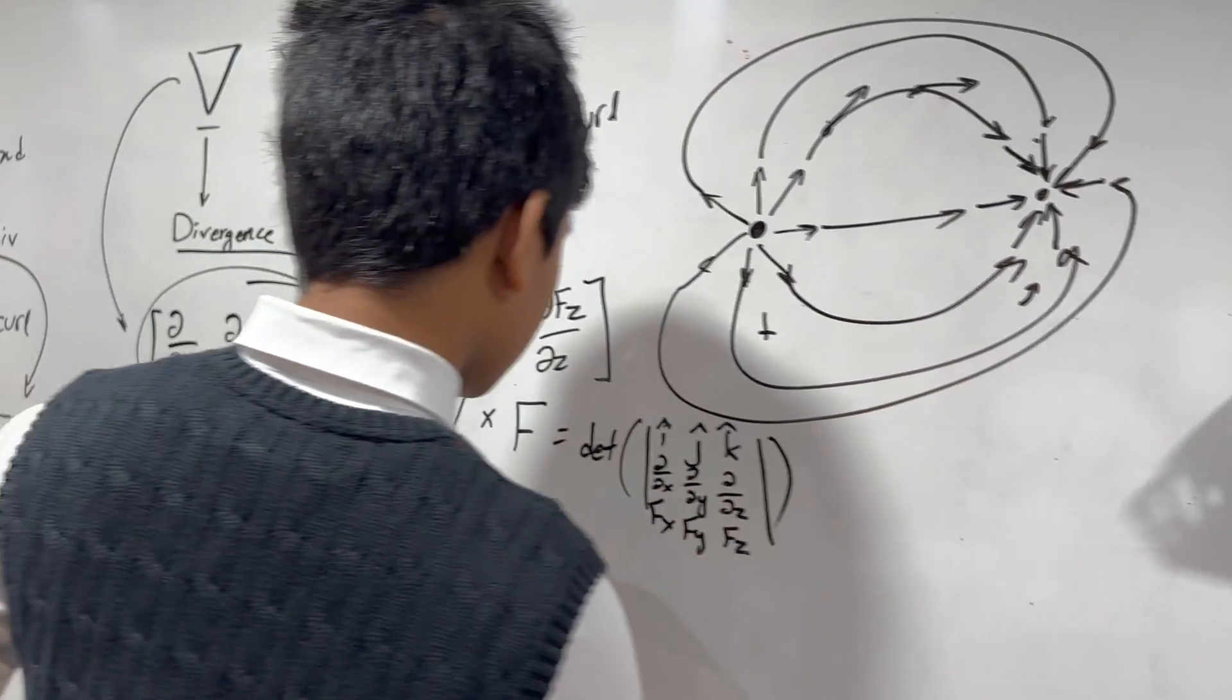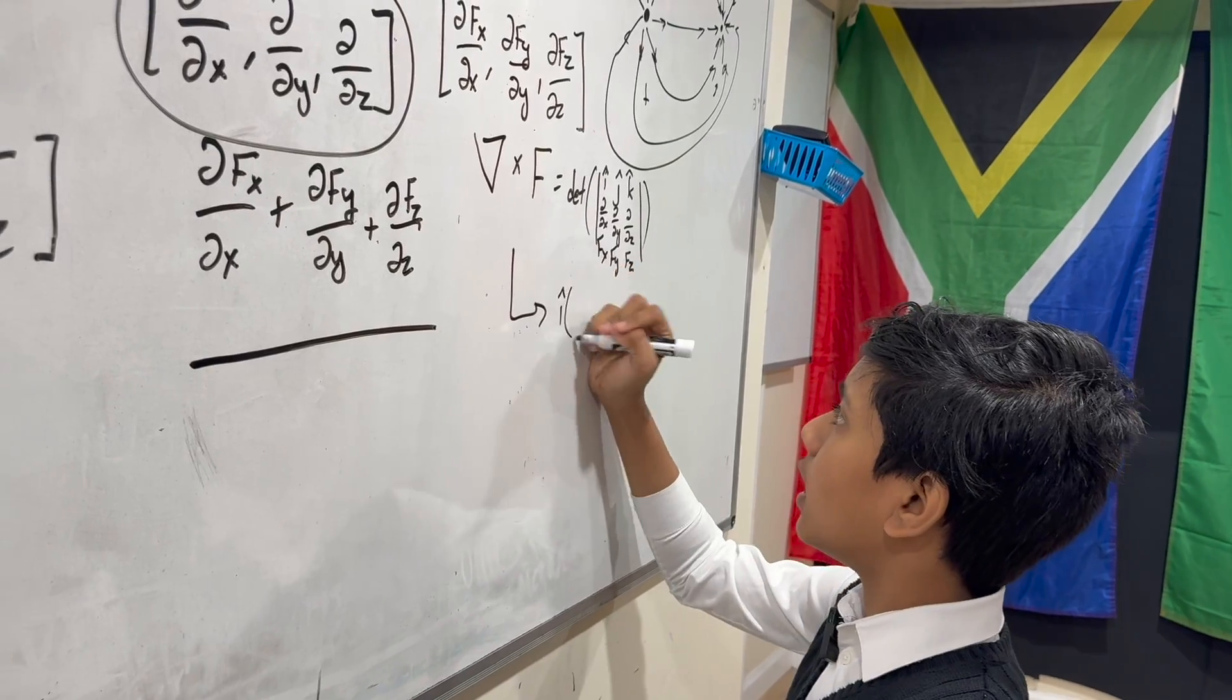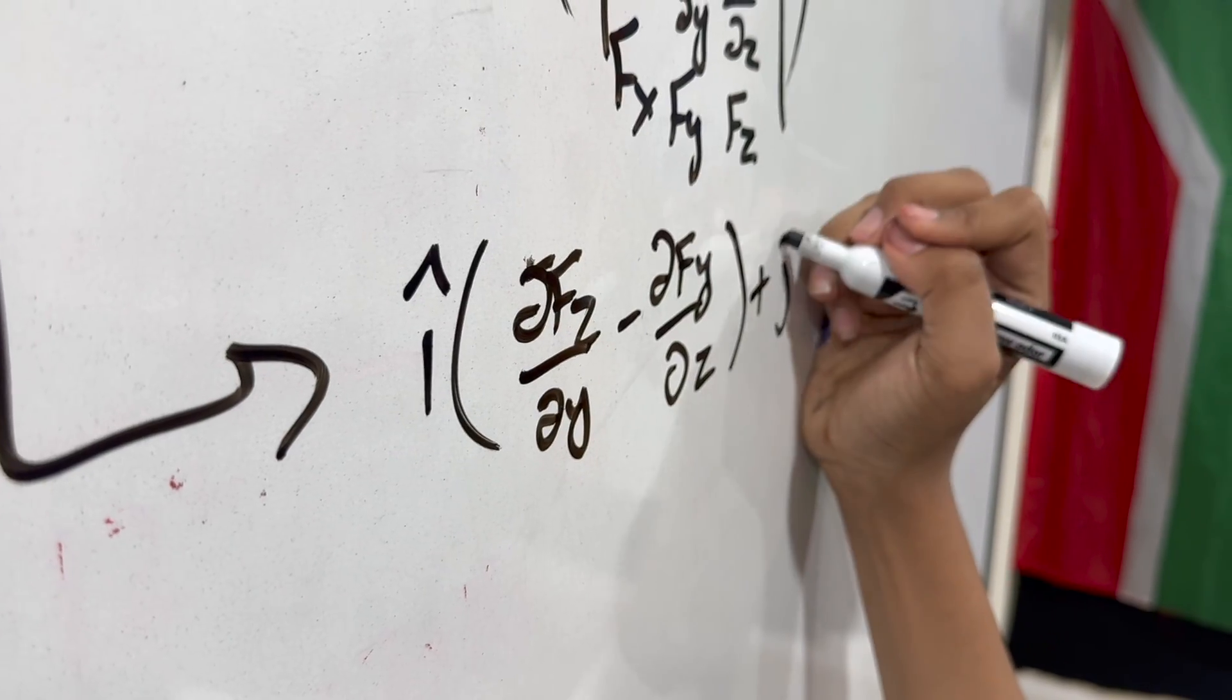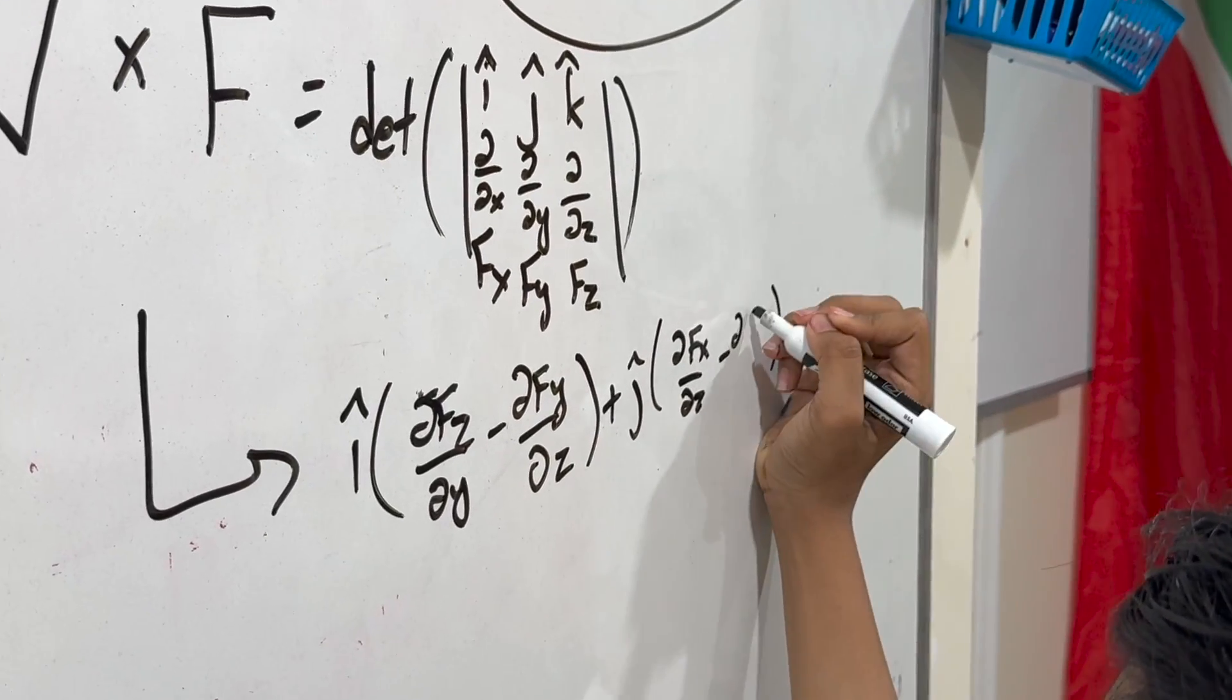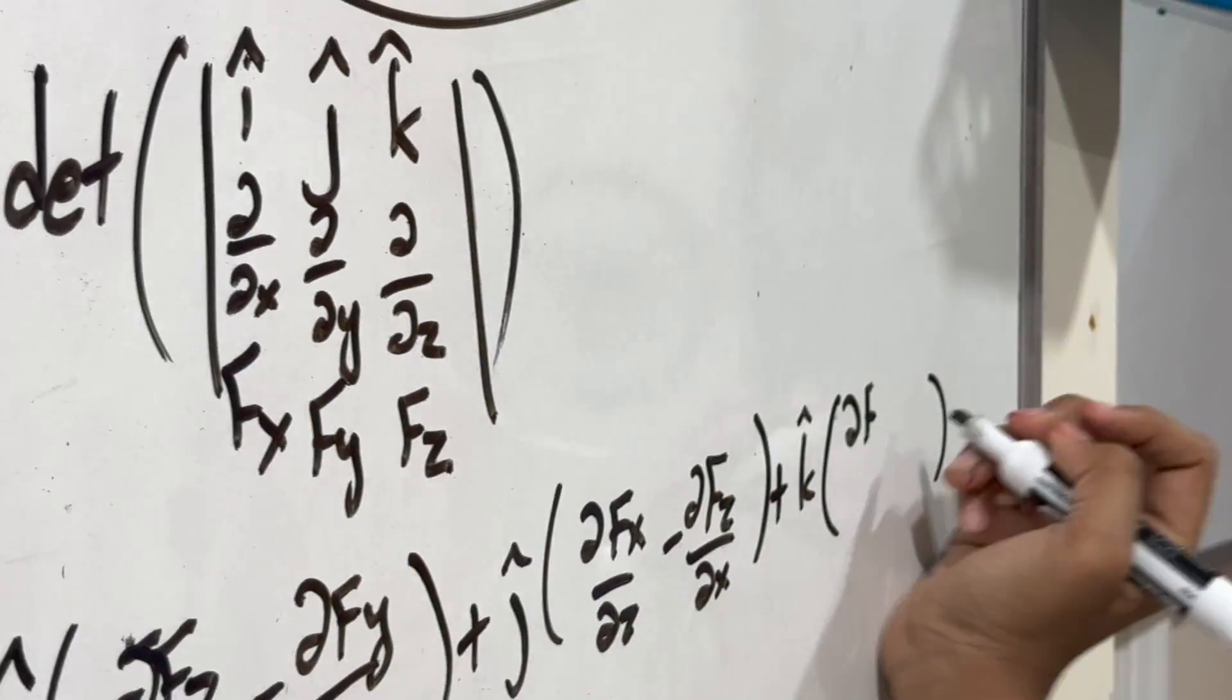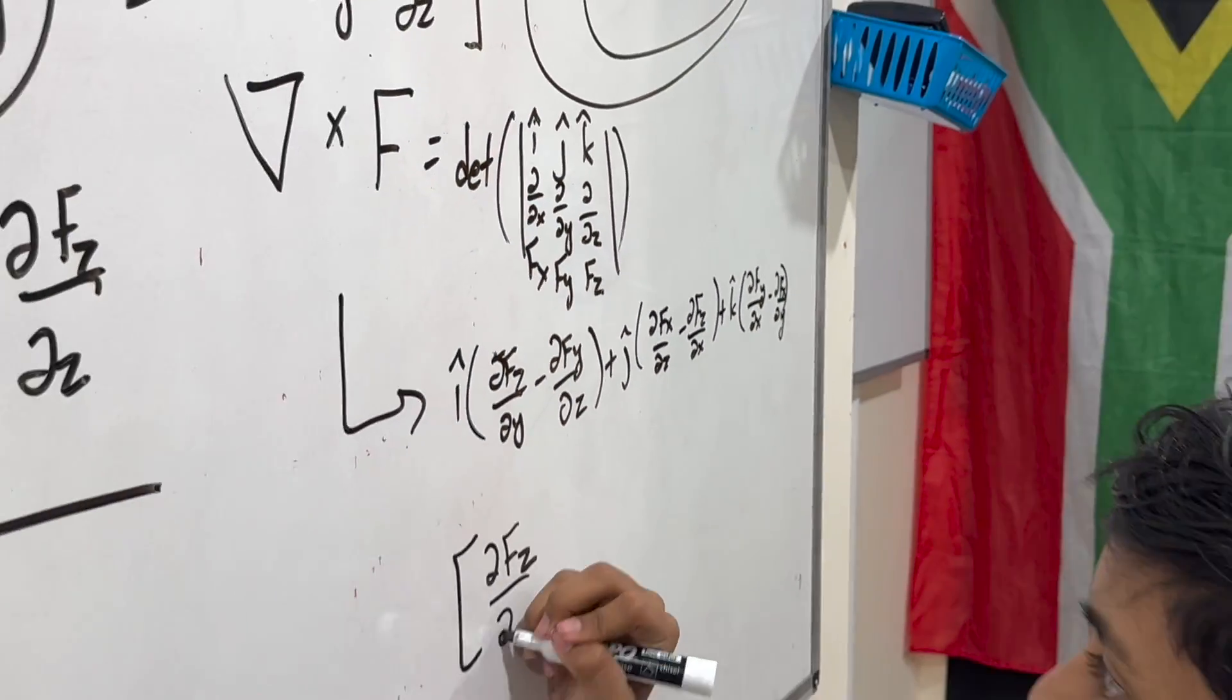So, this is how the curl looks like. And if you actually bothered to take the gradient, no, the cross product or the determinant, you would find that it would be, let's see, I, F, partial fz partial y, minus partial fy partial z, plus J, times, let's see, partial fx partial z, minus partial fz partial x, plus K, times, partial fz, let's see, y, partial x, minus partial fz, minus partial fz, over partial y. Or, in other words, written in vector form, it would look like this.